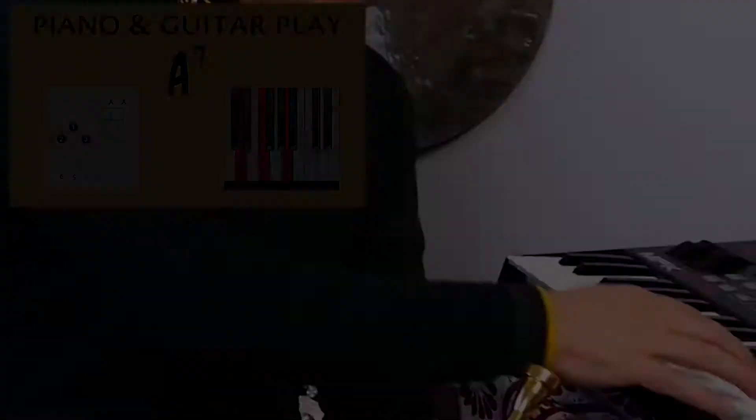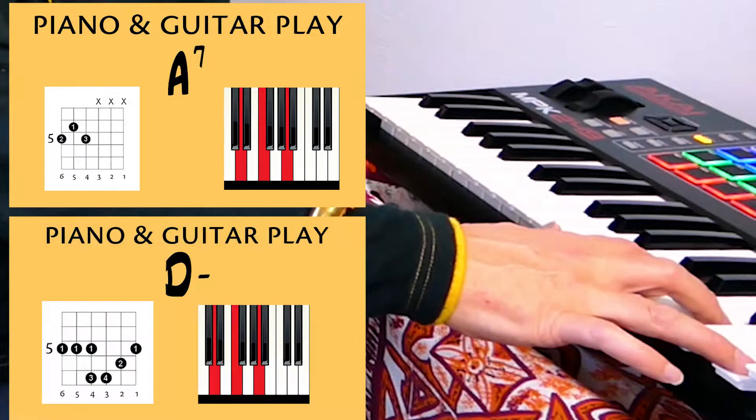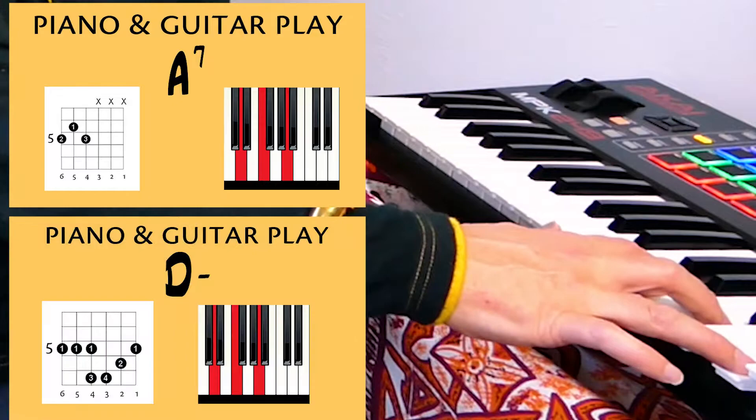That dominant seventh chord, the V chord, leads our ear to the I chord. Let me show you an example on the piano. For piano it's an A7, not a B7, because trumpet is a B flat instrument, and it's going to D minor. That sound really wants to go there — five to one. You've heard it a million times.